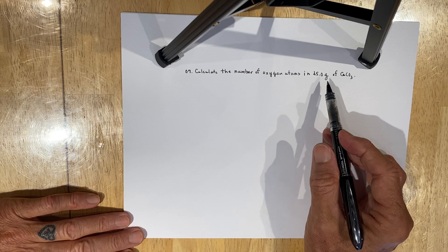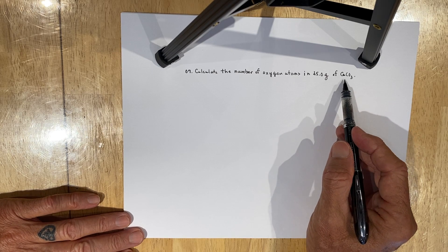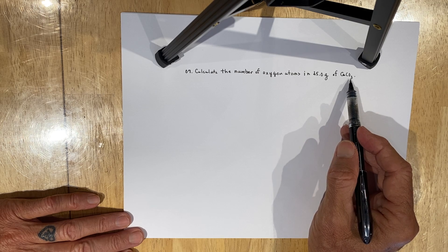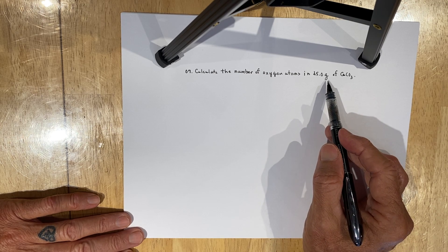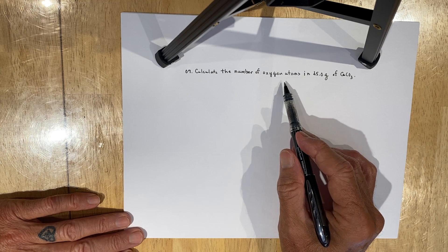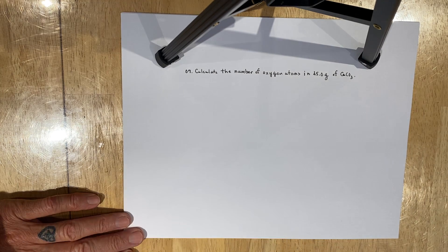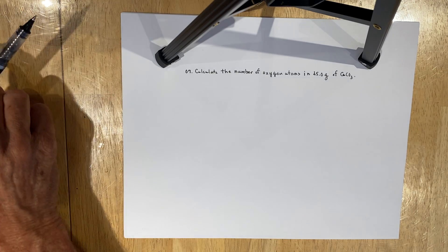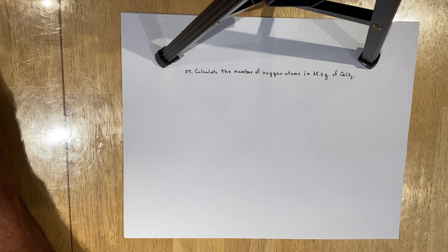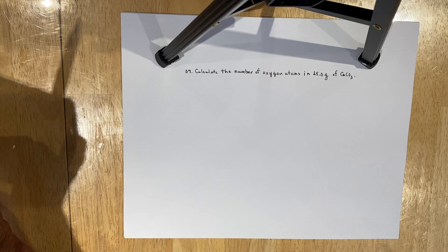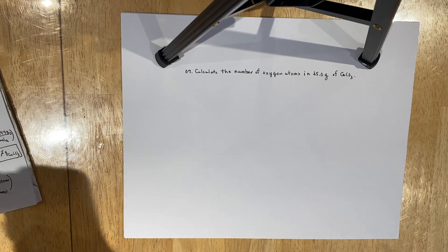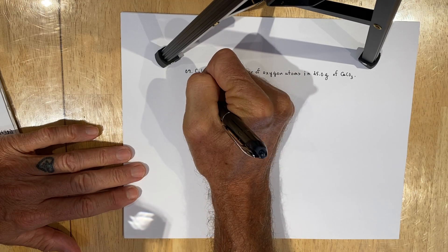At issue is you are given a mass of calcium carbonate, which is an ionically bonded substance, and you're going to have to convert grams of calcium carbonate to number of oxygen atoms. That looks a little bit daunting, but I think you will find it's a problem we can handle in a pretty straightforward way by using the known/unknown solution style of problem solving.